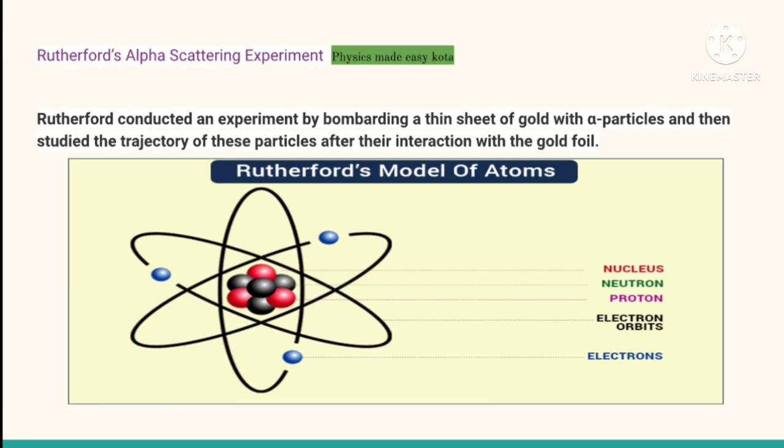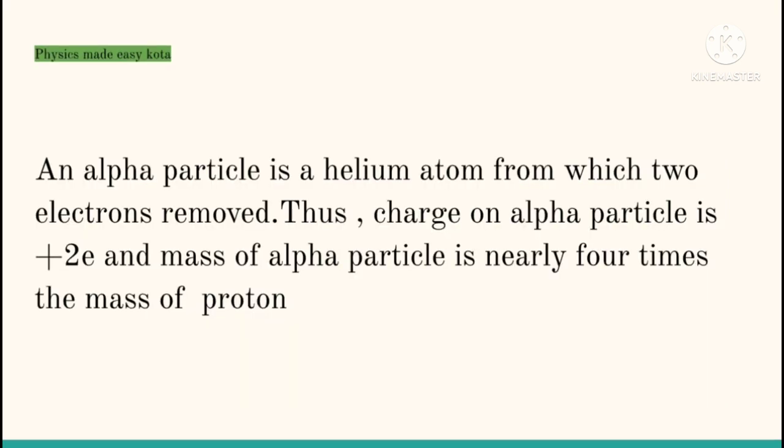Rutherford and his associates studied the alpha particle scattering by thin gold foil to suggest a new model of atom. He conducted an experiment by bombarding a thin sheet of gold with alpha particles and then studied the trajectory of these particles after their interaction with a gold foil. Rutherford performed a series of experiments on the scattering of alpha particles due to atoms of thin gold foil.